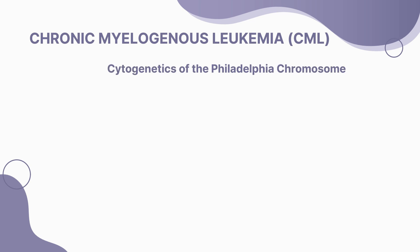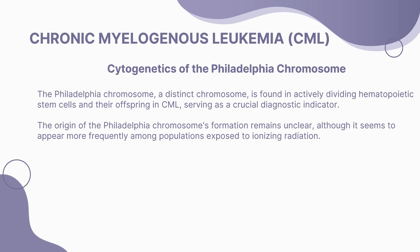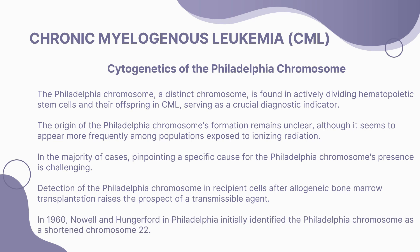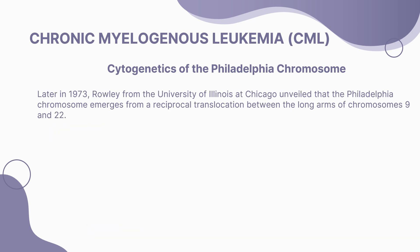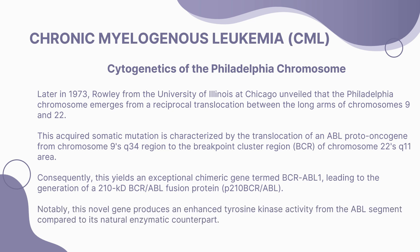The Philadelphia chromosome, found in hematopoietic stem cells, is a diagnostic indicator of CML. It was initially identified in 1960 by Nowell and Hungerford in Philadelphia as a shortened chromosome 22. In 1973, Rowley unveiled that it arises from a reciprocal translocation between chromosomes 9 and 22, resulting in the chimeric BCR-ABL1 gene, producing a 210 kD BCR-ABL fusion protein with enhanced tyrosine kinase activity.